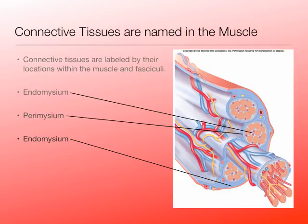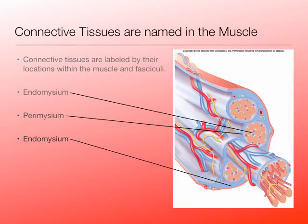So: endomysium, perimysium, epimysium. These are the connective tissues that create the structure of the muscle — bundling the muscle fibers into fasciculi, and all of the fasciculi together into a whole muscle. This is why when we go dissecting, a whole muscle stands together. It's really made of all these little threads, but it stands together because of these layers of connective tissue. If you break through the epimysium, you get all those little threads, which are fasciculi bundled with connective tissue.